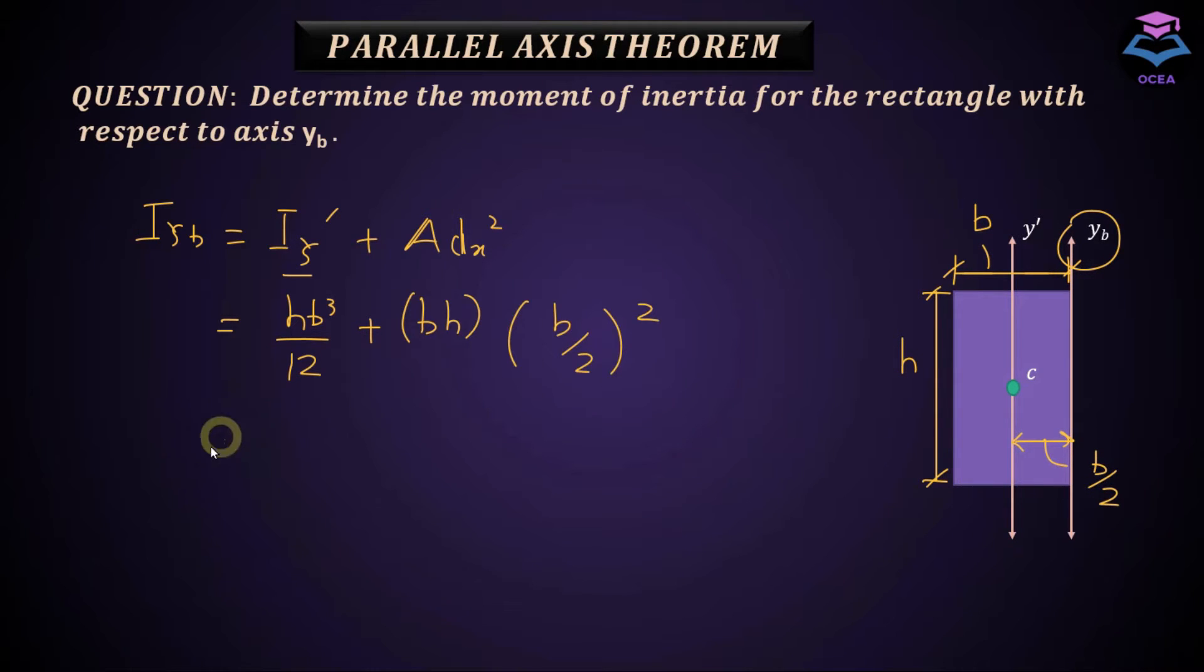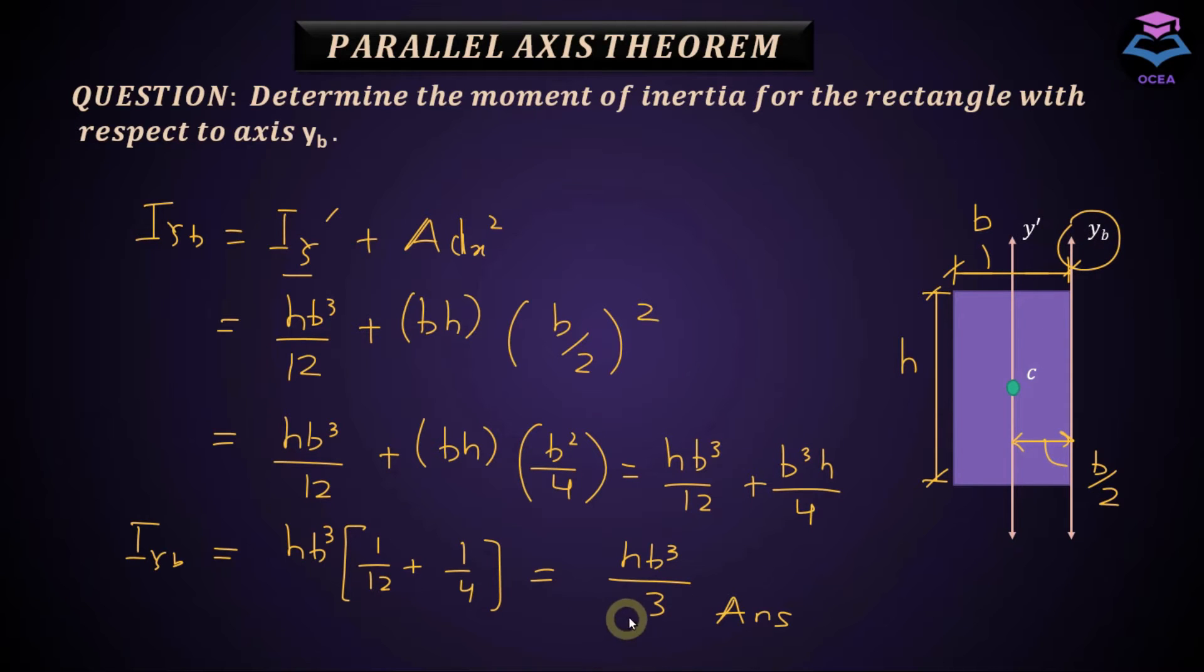And if you simplify it. So moment of inertia about this axis, yb axis is coming out to be equal to hb cubed divided by 3. And that's your answer.